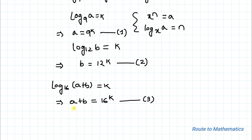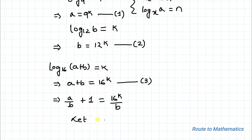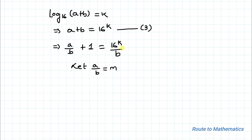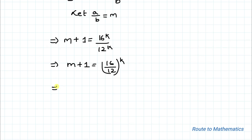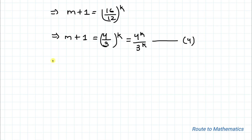Now let's divide both sides of equation 3 by b. We get a/b + 1 equals 16 to the power k divided by b. Let a/b equal m, so our equation becomes m + 1 equals 16 to the power k over 12 to the power k, which simplifies to (4/3) to the power k, that is 4 to the power k divided by 3 to the power k. And m equals a/b, so from equations 1 and 2, m equals (9/12) to the power k equals 3 to the power k divided by 4 to the power k.